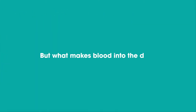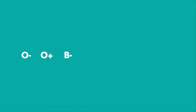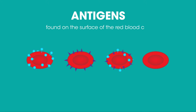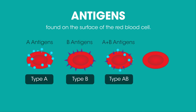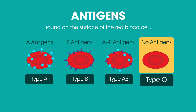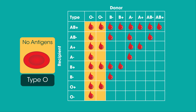But what makes blood into the different types? The type O, B, A, or AB depends on little molecules called antigens that are found on the surface of the red blood cell. The antigens can be one of four options: A antigens, B antigens, both A and B antigens, or there may be no antigens. The type of antigens you have determines which blood type you are. See how type O doesn't have any antigens? That's why it's the special blood type that can be donated to everyone else — it's known as the universal donor.